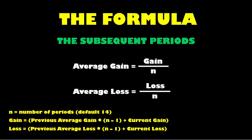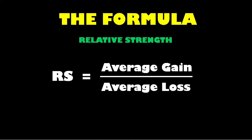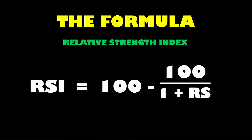The subsequent periods are calculated differently. For the average gain, it's the previous average gain multiplied by the number of periods less 1, and then if there was any gain in price for the current period, you add that on — which effectively makes up for that minus 1 in the formula. Finally, you divide that figure by the total number of periods. Likewise on the loss side, it means the previous average loss multiplied by the number of periods less 1, plus any current loss in price from the latest period, then divide by the total number of periods. Whether it's for the first or subsequent periods, the relative strength is that average gain figure divided by the average loss figure. That relative strength figure is then popped back into the RSI formula, which allows the indicator to oscillate between 0 and 100.